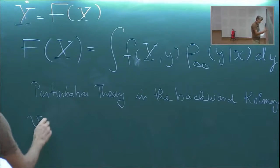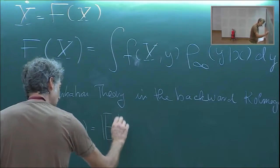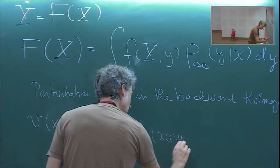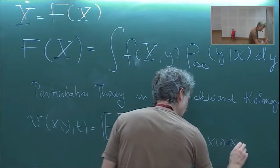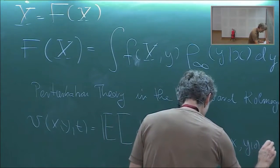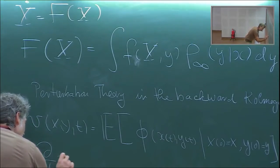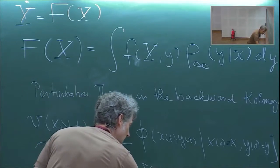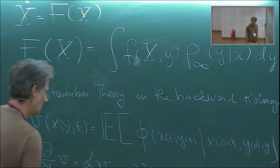We introduce v(x, y, t), defined as the expectation value of some observable φ(x(t), y(t)) given that x(0) = x and y(0) = y. We know the evolution equation is given by the Cauchy problem, where v(x, y, 0) = φ(x, y).